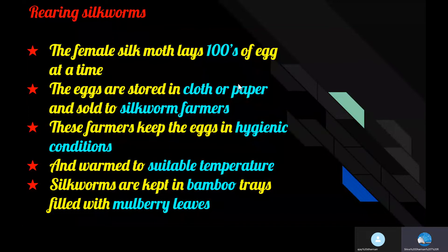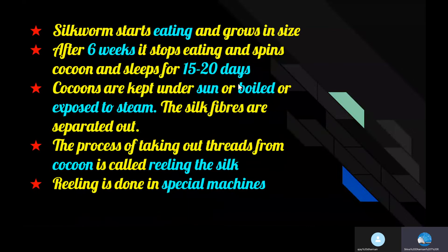The larvae or silkworms or caterpillars are kept in clean bamboo trays along with freshly chopped mulberry leaves. The larvae eat day and night and increase in size. The larva is said to eat about 30,000 times its initial weight during the six-week feeding period. During this period, it undergoes molting four times.